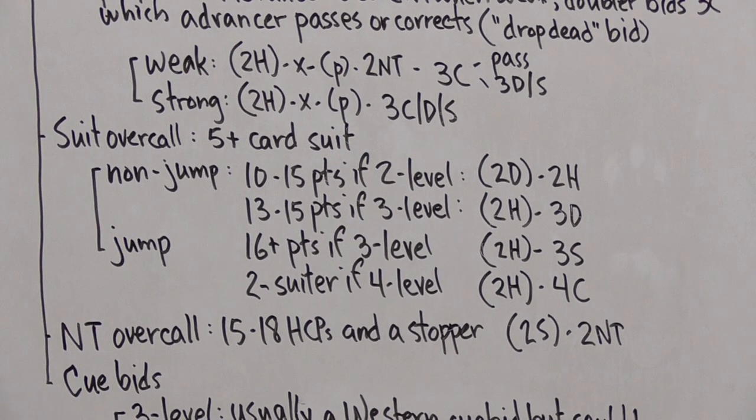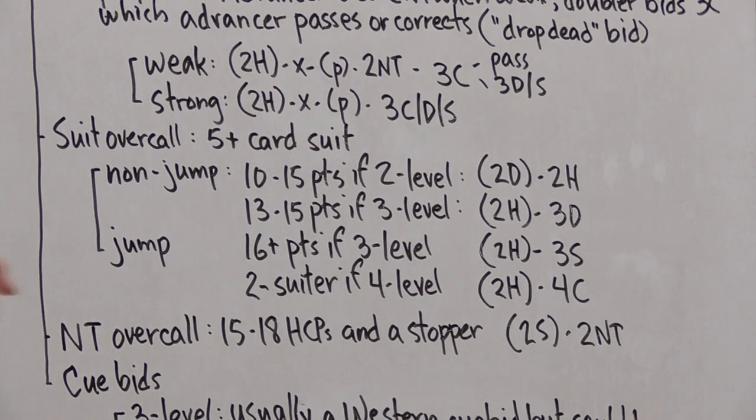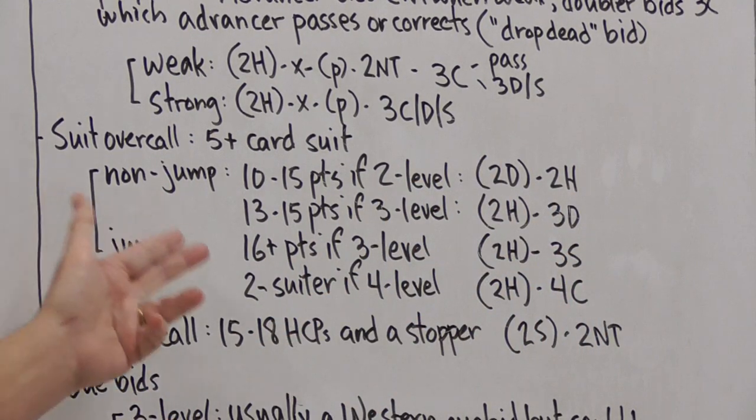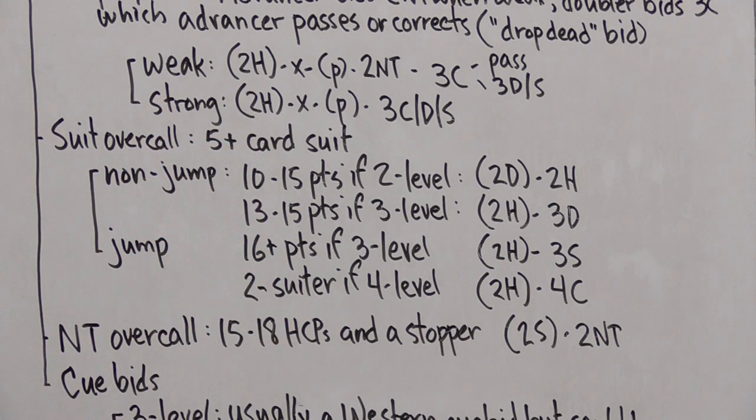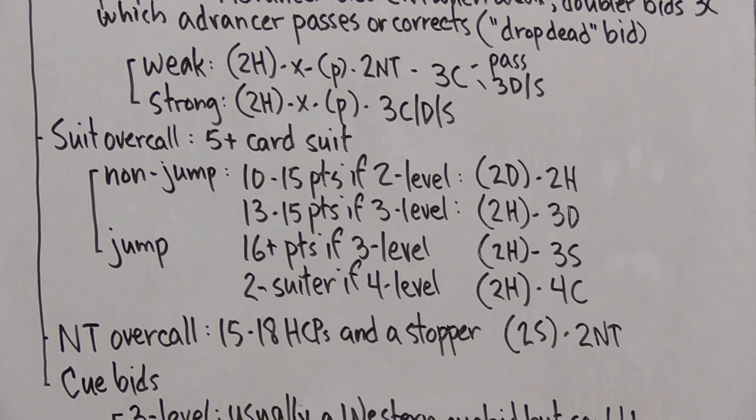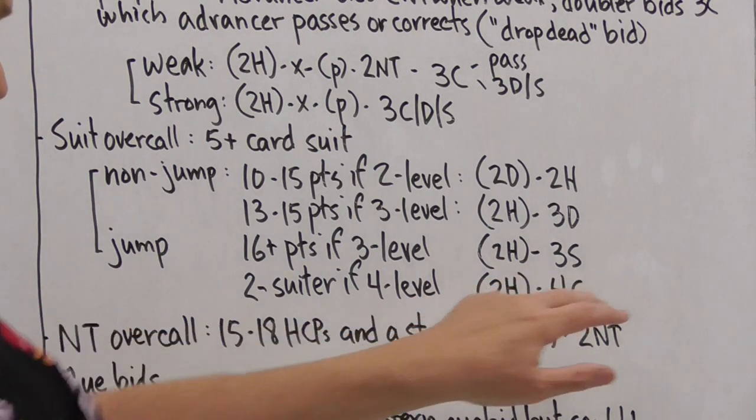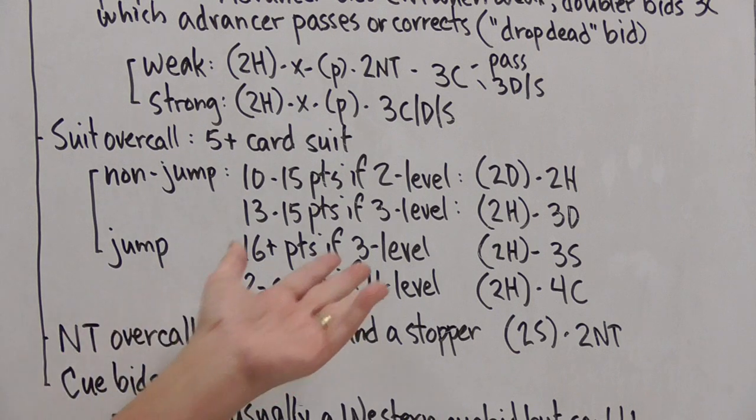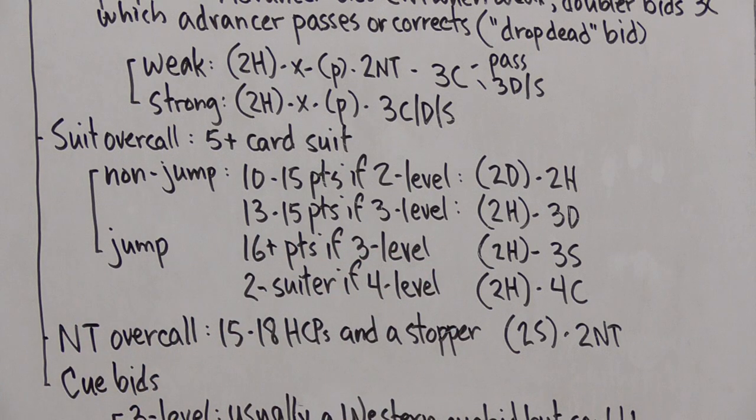Now here are the jump overcalls in a new suit. If we can do this at the three level, such as two hearts from the opponents, three spades, this is showing a hand that's better than this one, 16 plus points. There's also an interesting bid here for showing two suited hands. This is a form of what's called Leaping Michaels. Two hearts, four clubs. That bid is showing a 5-5 shape in the spades and clubs. I won't spend much time talking about that, but there are a variety of bids in the Leaping Michaels series. Some of them are over weak two, some of them are over three level preemptive opening bids.